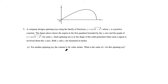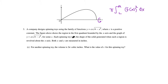Part (c) states that for another spinning toy, the volume is 2π cubic inches, and asks for the value of c. Since we're revolving the region around the x-axis with vertical slices, we use the disk method. The general form is π times the integral from the left to right bound of the function squared dx. From part (a), our bounds are x = 0 to x = 2, and the function is cx√(4 − x²).